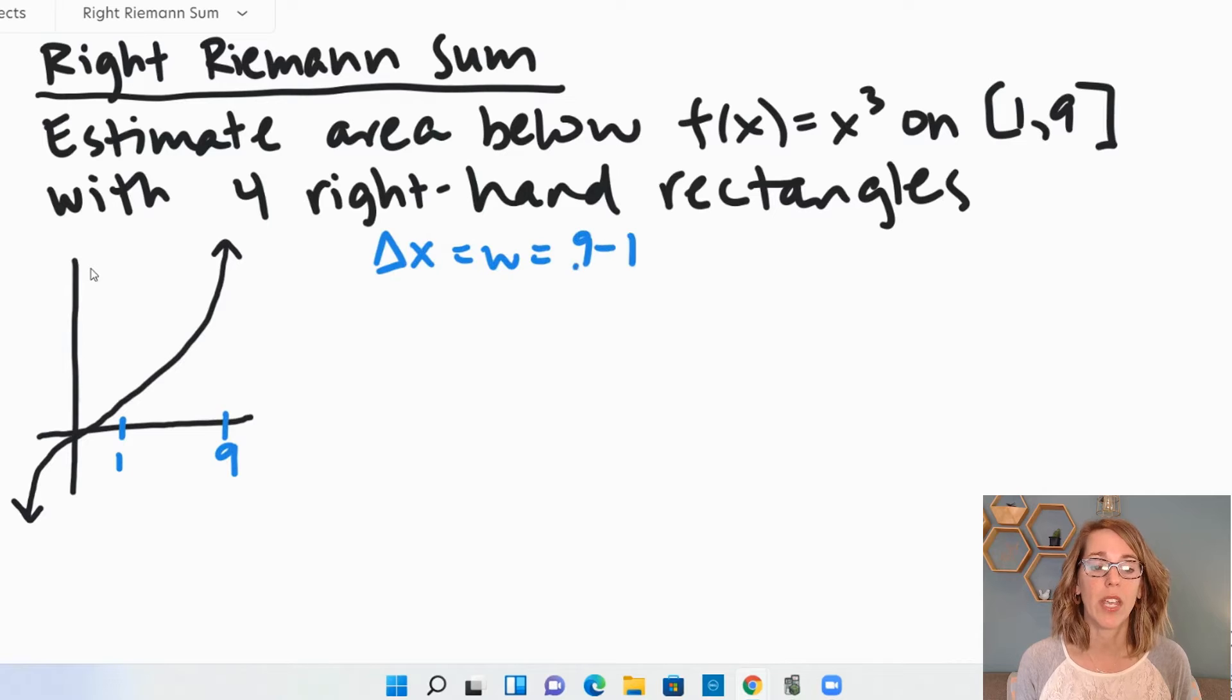I'm going to take the interval length, so 9 minus 1, divided by the number of rectangles. That's going to be 8 divided by 4, or 2.